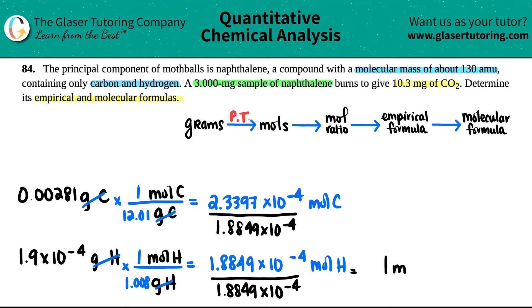Turns out that I have one mole of C, and let's see what's going on here. 2.3397 times 10 to the negative 4th divided by 1.8849 times 10 to the negative 4th. I get roughly 1.25 moles of H. Hold on, this should be C, and this should be H. Now, I just want to make sure that, yeah, looks like all the math is good.